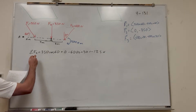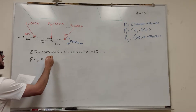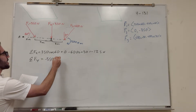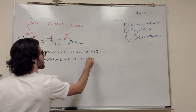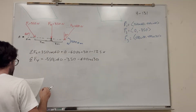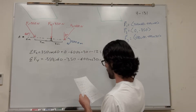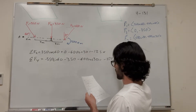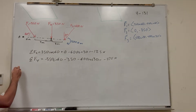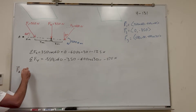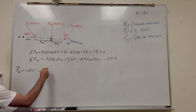Now the sum of forces in the y-direction: that's negative 350 sine(60) minus 350 minus 600 cosine(30) — all of those are negative. Adding these up gives negative 1170 newtons. So the force resultant vector is negative 125i minus 1170j newtons.